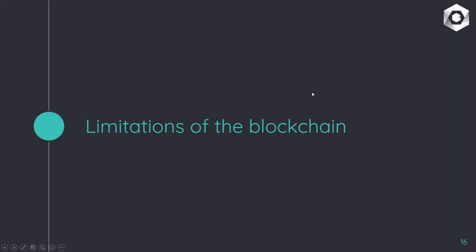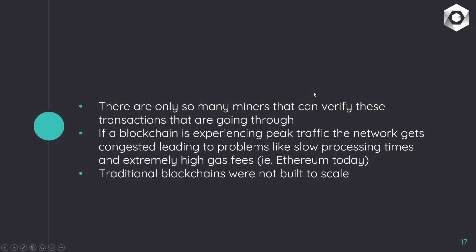Moving on to the limitations of the blockchain: with blockchains, there are only so many miners that can verify the transactions going through. The problem is that if the blockchain is experiencing peak traffic, the network gets congested, leading to problems like slow processing times and extremely high gas fees — like we've all heard of with Ethereum. In short, blockchains weren't built to scale.